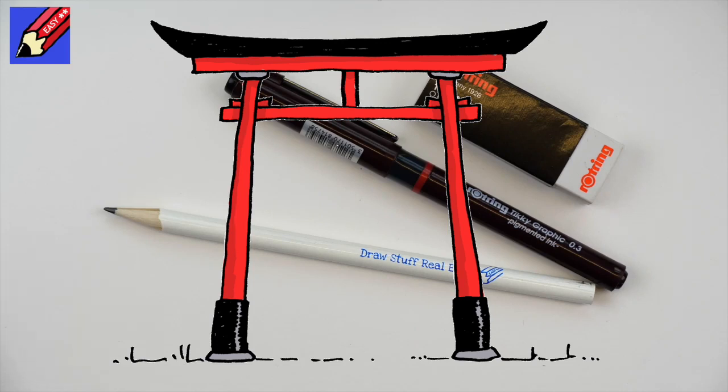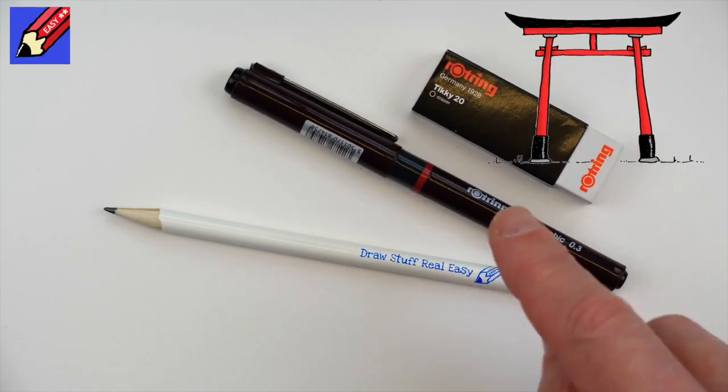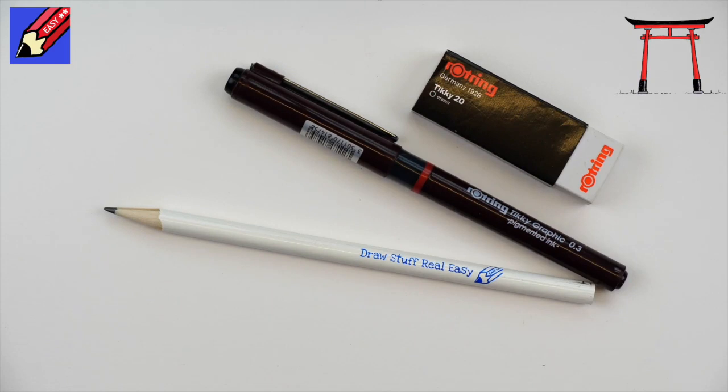To draw a Japanese Torii arch, you will need a pencil, a pen and an eraser. But let's not talk about it. Let's do it.